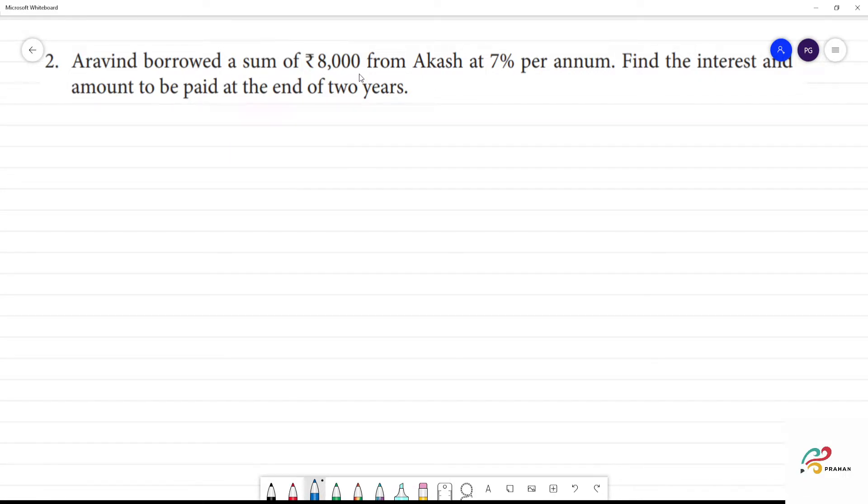Aravind borrowed a sum of Rs.8,000 from Akash at 7% per annum. Find the interest and amount to be paid at the end of two years.